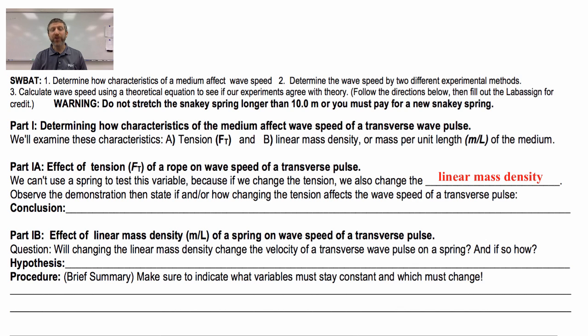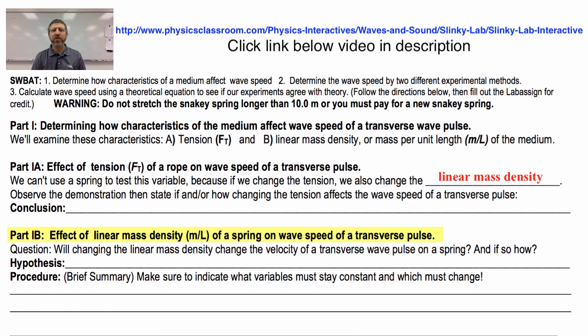Once you are done with that, you are going to determine the effect of linear mass density. That's mass per unit length, how many kilograms per meter of a spring, and how that affects wave speed of a transverse pulse. You're going to have to figure out what you have to keep constant, what you have to change, and you're going to actually do that in the lab. Now, if you're doing this at home and you don't have access to lab materials, you can click this link right up here, and that has a simulation of it, but it's way better to try it in lab if you have materials available. So go ahead and give that a try and record your results and good luck in lab. We'll see you there.